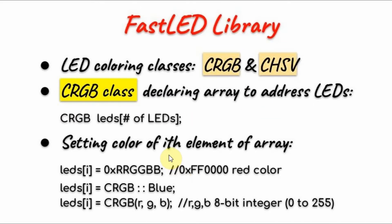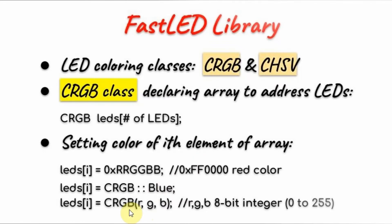We have three ways to set the color of the ith element of array LEDs. Either we store a hex value into the ith element, where this represents an 8-bit value for red, 8-bit for green, and 8-bit for blue — so if we want to set the color to red, this would be the hex value. We can also set the color by specifying a constant that belongs to the object CRGB.